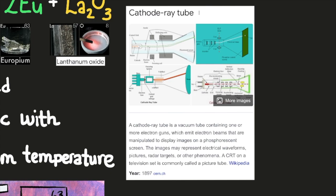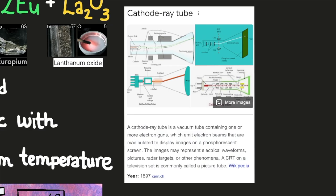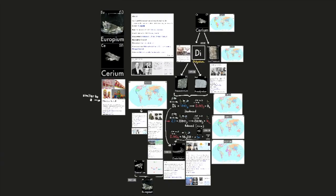Again, europium is used in cathode ray tubes. A cathode ray tube is a vacuum tube containing one or more electron guns, which emit electron beams that are manipulated to display images on a phosphorescent screen. The images may represent electrical waveforms, pictures, radar targets, or other phenomena. A CRT on a television set is commonly called a picture tube, according to Wikipedia. It was invented in 1897, according to cern.ch.